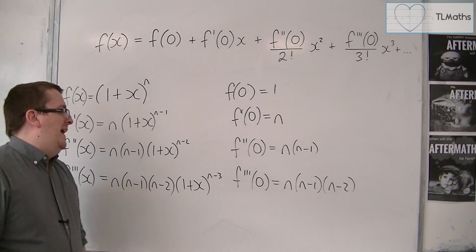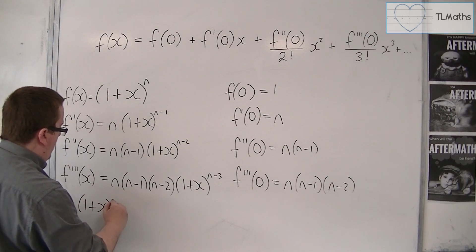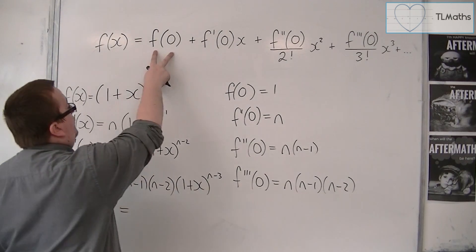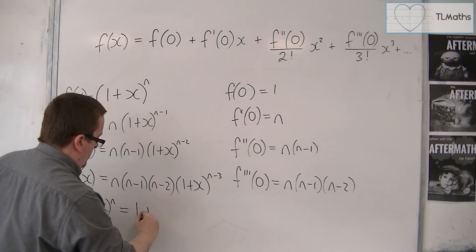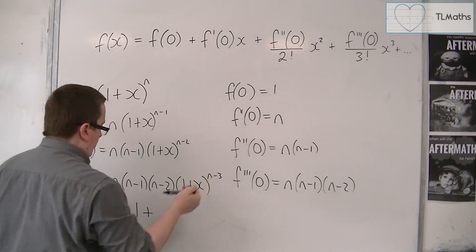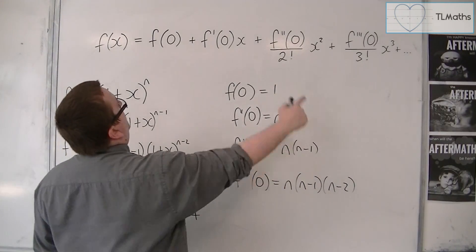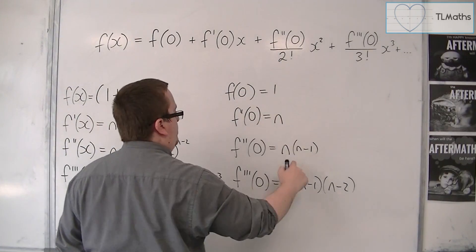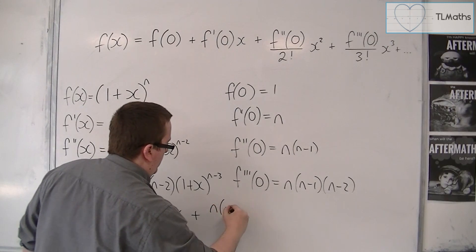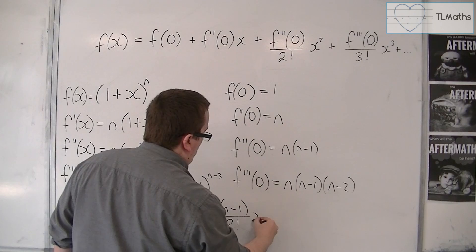So what do we have? We've got 1 plus x to the n is equal to f0, which is 1, plus f prime 0, which is n, times x. So nx plus f double prime 0 over 2 factorial. So n, n minus 1 over 2 factorial x squared.